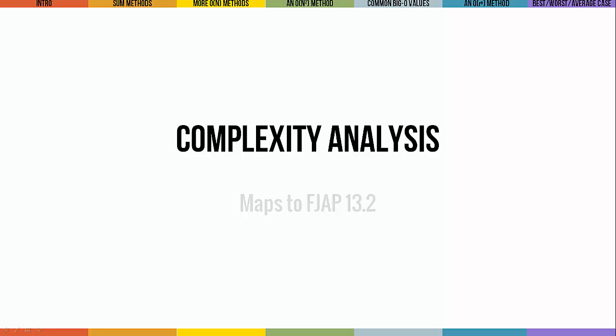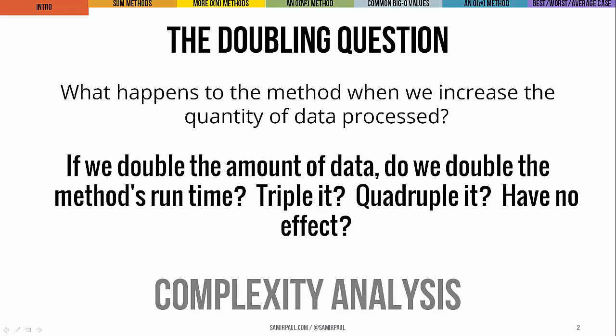Now for a preview of a topic that you'll treat in great detail in future CS classes. There's a very important question we need to ask every time we write a method: what happens when I increase the quantity of data that this method is going to process? If I double the amount of data, does that double the method's runtime, or triple it, or quadruple it, or does it have no effect? We call this kind of examination complexity analysis.